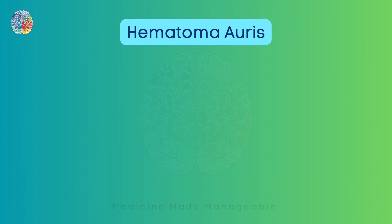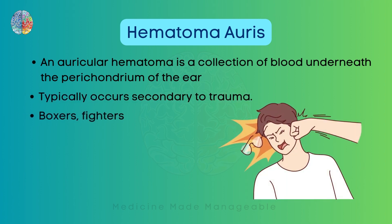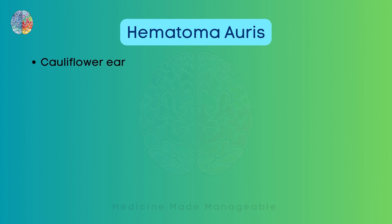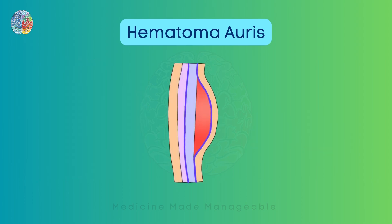Coming on to our second disease, hematoma auris. In this condition, there is a collection of blood underneath the perichondrium of the ear. This is very typically seen after a trauma or a hit to the ear, and it is because of this that the condition is mostly associated with boxers and fighters. The second name for this condition is cauliflower ear, and comparing the two pictures you can see a slight resemblance.